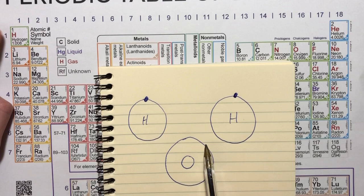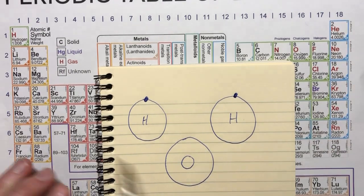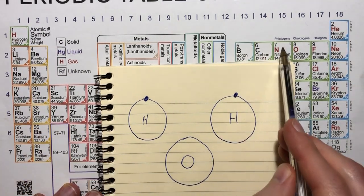Oxygen, on the other hand, has an inner shell with two electrons and then another shell with one, two, three, four, five, six.